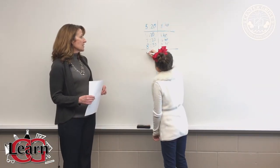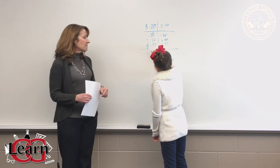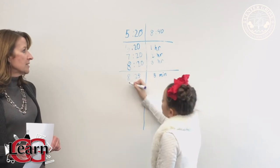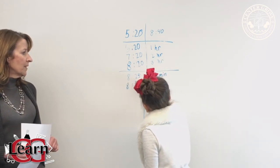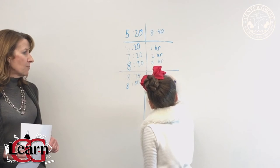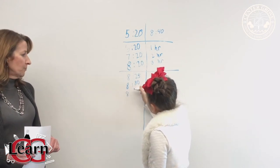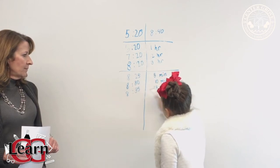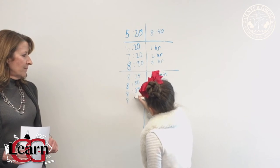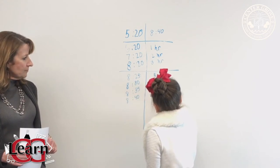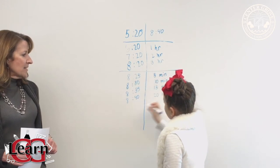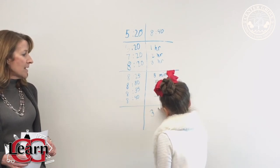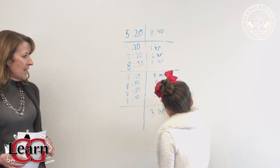Now she'll work on minutes. She starts at 8:20 and adds five minutes — 8:25 — and then she'll continue until she gets to 8:40, adding in five-minute increments and keeping track on the right side of the t-chart. She gets up to 8:40 and that's where she needs to stop. She'll draw her line and then look at the right side of her chart to find her answer. The elapsed time is three hours and 20 minutes.